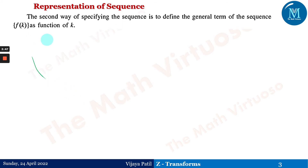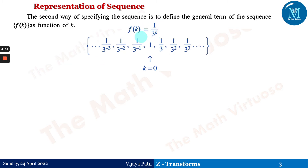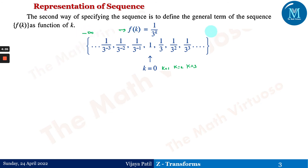Now, the second way of representing a sequence is to define the general term f(k) as a function of k. For example, if f(k) = 1 / 3^k, then the sequence corresponding to this function is defined accordingly. If we put k=0 we get the value 1; if k=1 we get 1/3; for k=2 and k=3 we get the corresponding terms. Since the range is not given, the sequence is understood to go from minus infinity to plus infinity, including all negative k values.